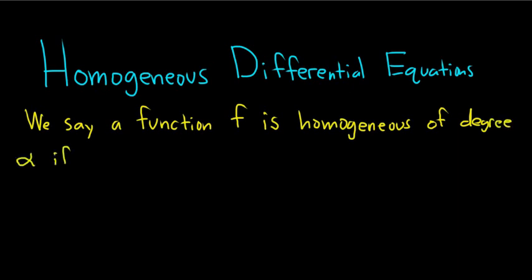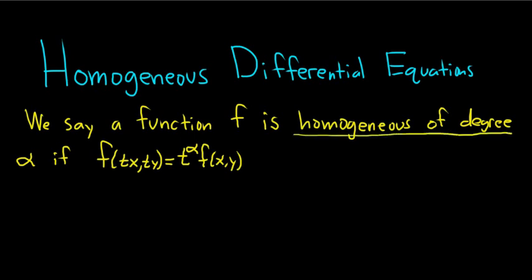If whenever you look at f of tx, ty, what you can do is you can factor out t to the alpha. Now alpha is a Greek letter here, and you get f of x, y. So a function f is homogeneous of degree alpha if this is the case.